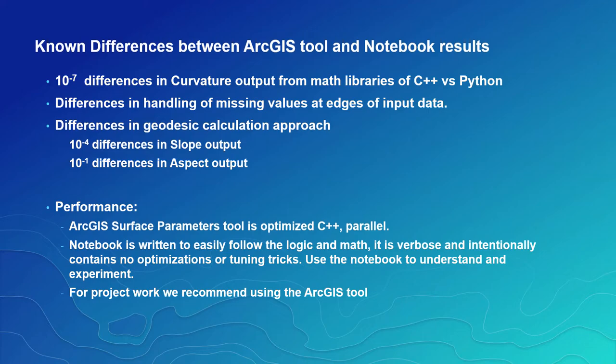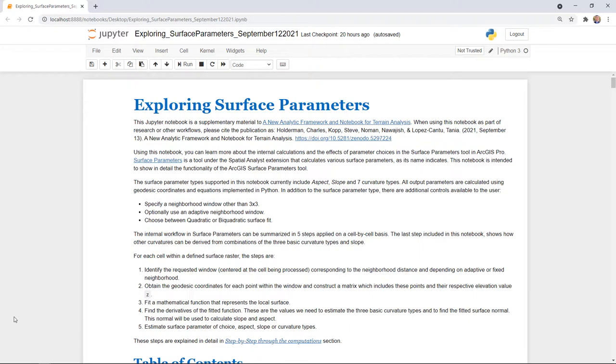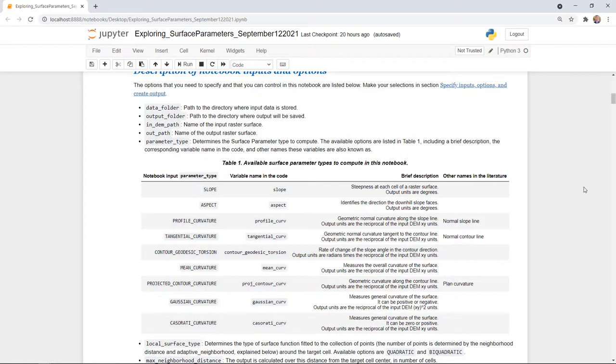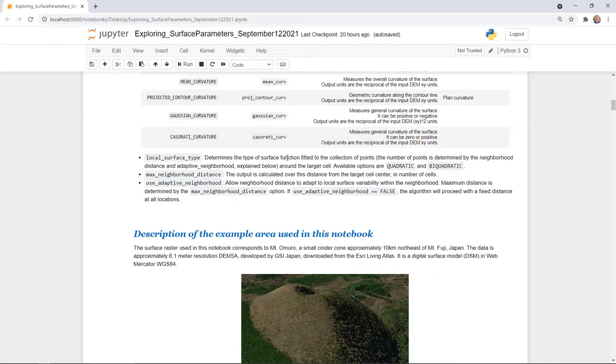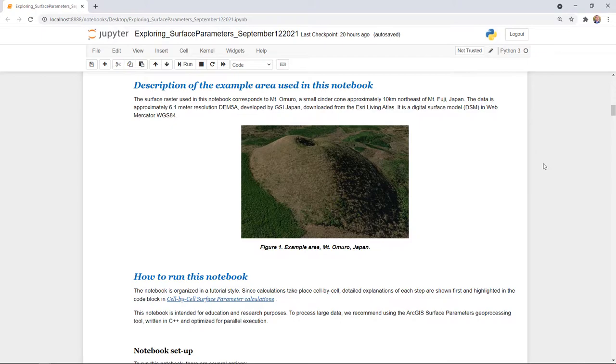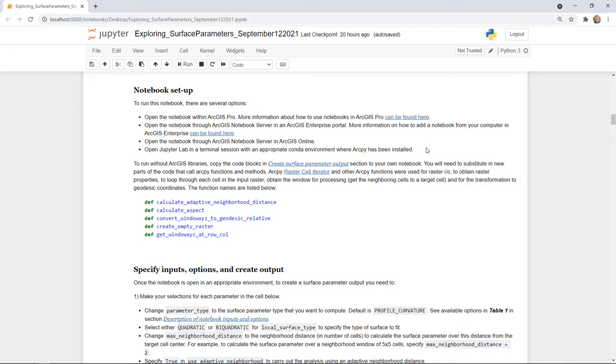So let's take a look at the notebook. At the top of the notebook is just an overview of the notebook and the structure of the notebook, followed by the input and output folder and path, the set of parameters or options. This is the set of terrain metrics or surface parameter types that can be calculated, their name in the notebook, their variable name, a brief description of them, and their output units and any alternate names that might be used. Also here is the other things you can set, the surface parameter type, the neighborhood distance, and the Boolean to use an adaptive neighborhood or not.